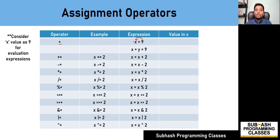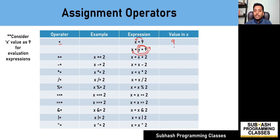So it means now the value that is stored in the variable x is nine. As another expression, x is equal to y is equal to nine. What happens in this case: the value of nine gets assigned to the variable y, and this entire expression becomes nine, which then gets assigned to the variable x. So one thing to understand is that assignment operators have associativity from right to left, and that is the reason the right-hand side assignment operator is evaluated first.